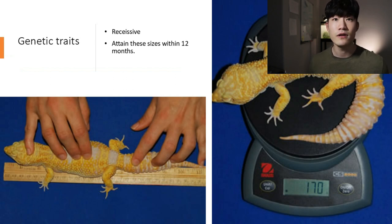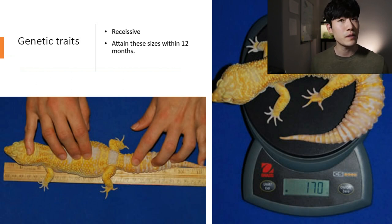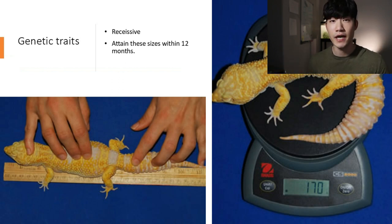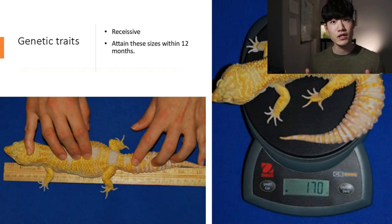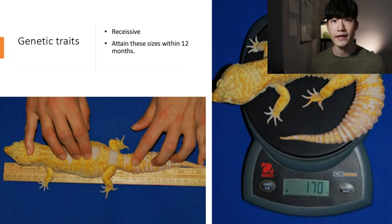There is also additional information on how to create a super giant. Some people say 24 months is a good period of time to determine if a gecko is a super giant, but actually at 12 months you will be able to tell whether they are super giant, giant, or normal.